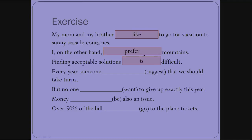Every year someone suggests that we should take turns. We learn that 'someone' and all the other pronouns are always singular and require a singular verb - suggests.